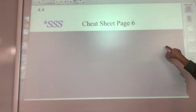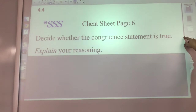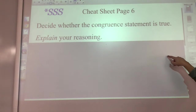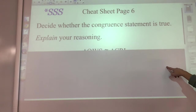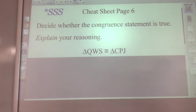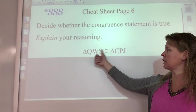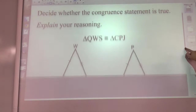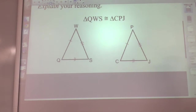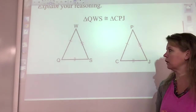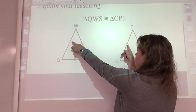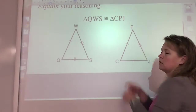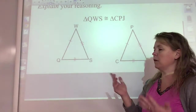We're going to work on that with congruent statements and see if they're true or not. Decide whether the congruent statement is true and explain your reasoning. We're going to take triangle QWS and make it congruent to triangle CPJ. This is a congruent statement for triangles — the letters have to be in the proper order. We'll look at the diagram and first check that all corresponding sides are congruent: a single tick mark, a double and double, a triple and triple. We do have side-side-side.